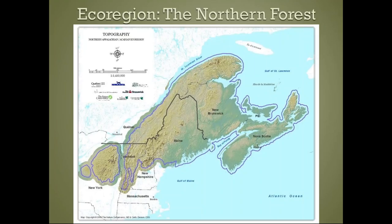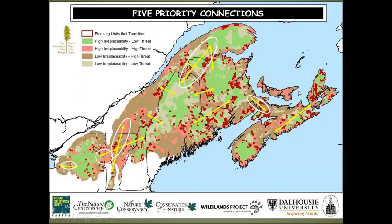This photograph map shows the northern forest ecoregion, which runs from west of the Adirondacks at the Tug Hill Plateau all the way out to the tip of Cape Breton. The northern forest is located in New York, Vermont, New Hampshire, Maine, Quebec, New Brunswick, and Nova Scotia. If you don't remember anything else about this presentation, I would like you to remember that this ecoregion is the most intact, broad-leaved, temperate forest in the entire world.